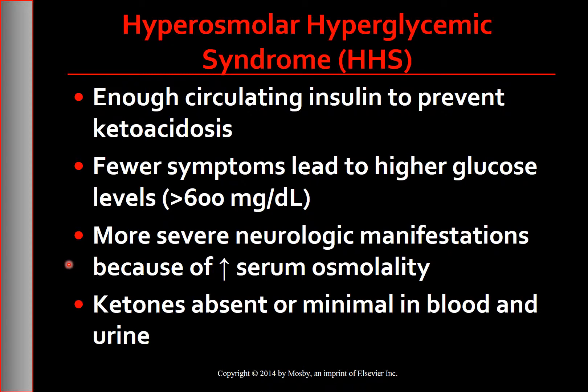The higher blood glucose levels increase serum osmolality and produce more severe neurological manifestations, such as somnolence, coma, seizures, hemiparesis, and aphasia. Because these manifestations resemble a stroke, immediate determination of the glucose level is critical for correct diagnosis and treatment.